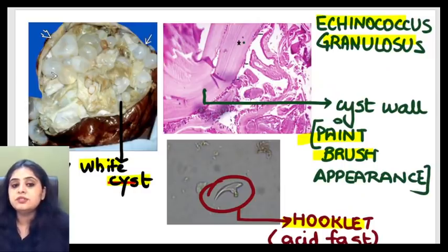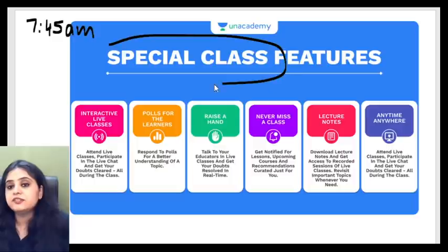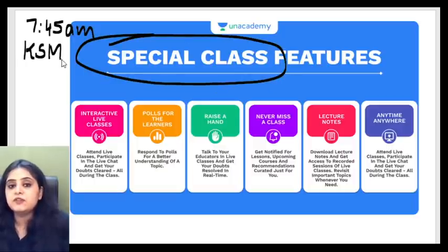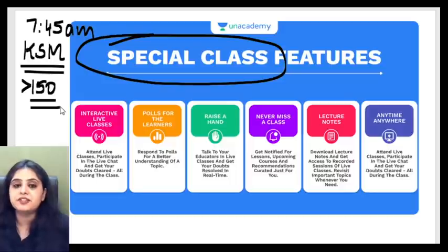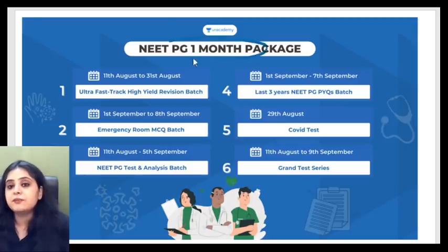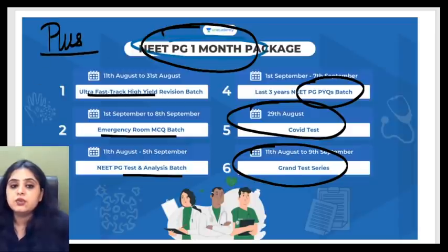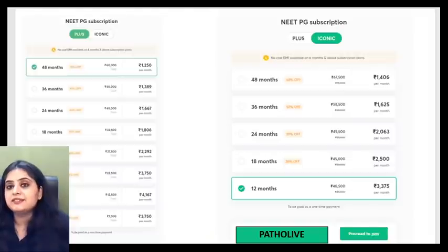For other students, I hope you are following the 7:45 ritual — at 7:45 a.m. I take a special class series on the Unacademy platform called the Kickstart Morning Session, abbreviated as KSM. We've completed over 150 classes. It happens every morning for 40 minutes at 7:45 a.m. Apart from that, there are 19 subject special classes on the platform, plus courses for exam-going students including a NEET PG special batch with grand test series, previous year papers, emergency room MCQs, and ultra-fast track revision.